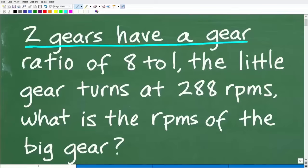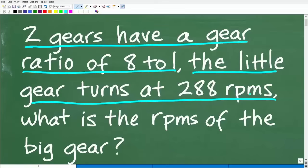Two gears have a gear ratio of eight to one. The little gear turns at 288 RPMs. What is the RPMs of the big gear?